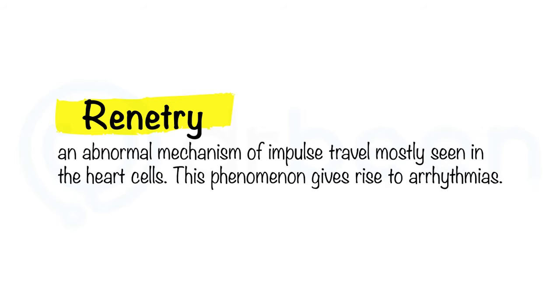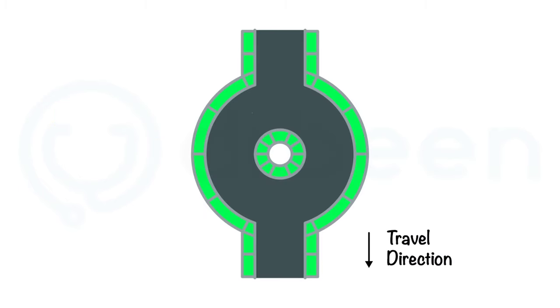Reentry is an abnormal mechanism of impulse travel mostly seen in the heart cells. This phenomenon gives rise to arrhythmias. In a normal heart, cells become refractory for some period of time as an impulse travels through them.